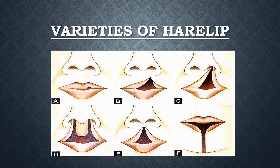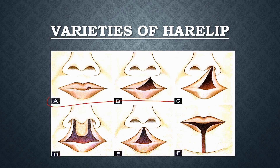Moving ahead, we have the varieties of hair lip. From point A to C, these are the unilateral hair lip, bilateral hair lip, and midline hair lip — or midline cleft of upper lip. Unilateral hair lip means the failure of fusion of the maxillary process with the medial nasal process of one side.